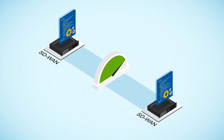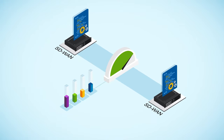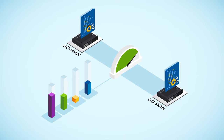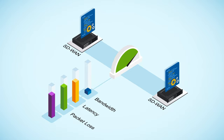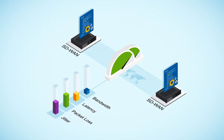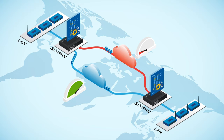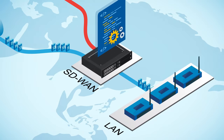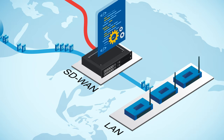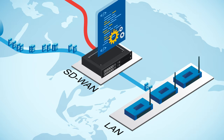SD-WAN peers also cooperate to continuously measure the performance of each transport network, estimating available bandwidth, latency, packet loss, and jitter. These estimates influence how the peers choose to steer traffic flows. For example, a transport network with significant or even total packet loss may be avoided entirely. Peers may also use these estimates to trigger mitigation techniques, such as dynamic jitter buffering.